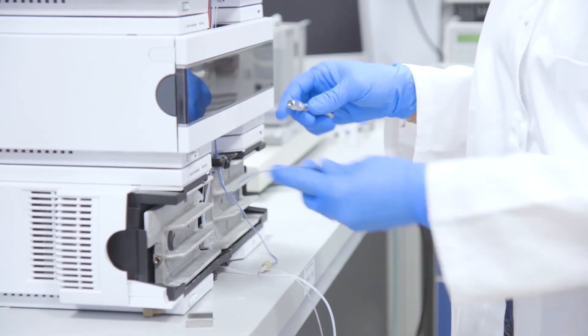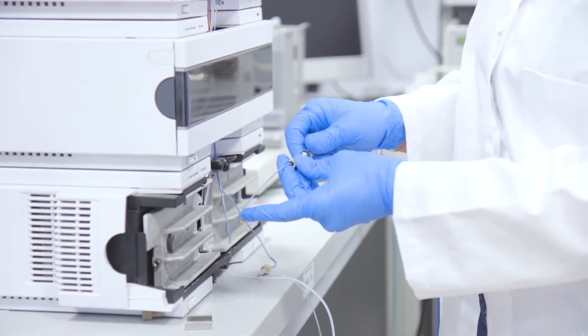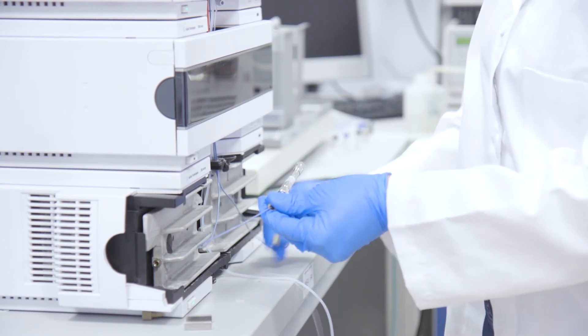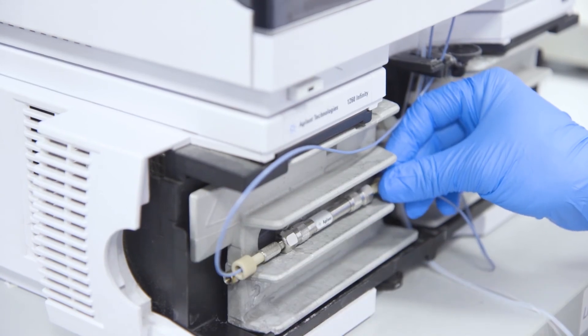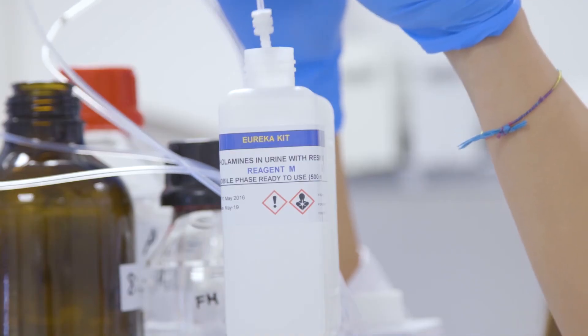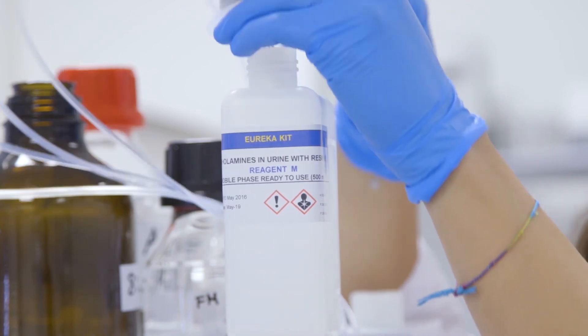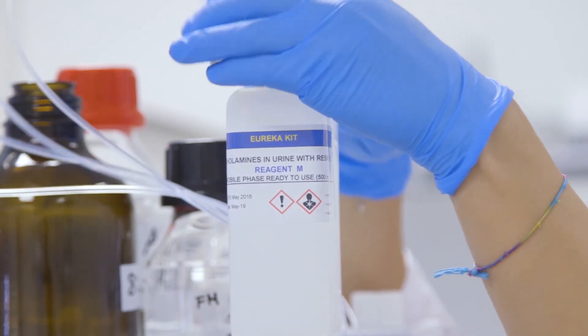First, we prepare the HPLC. The instrument must be cleaned from the previous analysis. We connect the clean analytical column to the system, insert the filter into the mobile phase reagent M, and let the pump flow at one milliliter per minute for one hour.